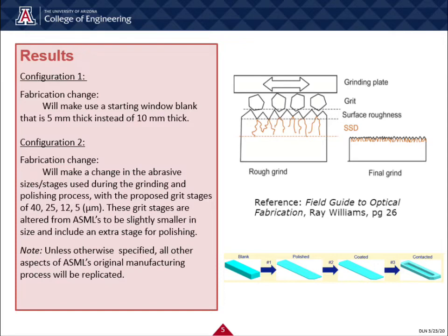Our first two solution configurations target each of these in order to minimize them. Our first configuration will make a fabrication change of starting with a window blank that is 5mm thick instead of the original 10mm thick. Our second configuration is another fabrication change that will modify the abrasive sizes and stages used during the grinding and polishing process, with proposed grit stages of 40, 25, 12, and 5 microns. These are altered from ASML's to be slightly smaller in size and include an extra stage of polishing.